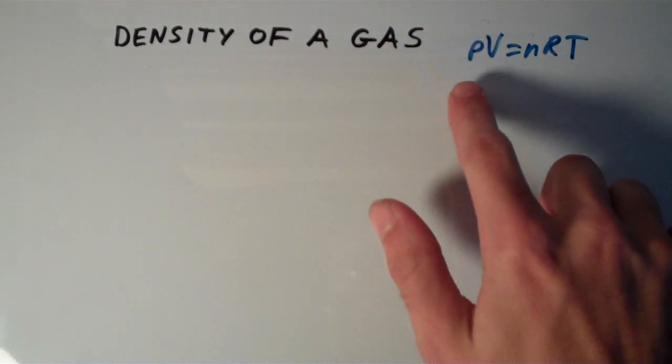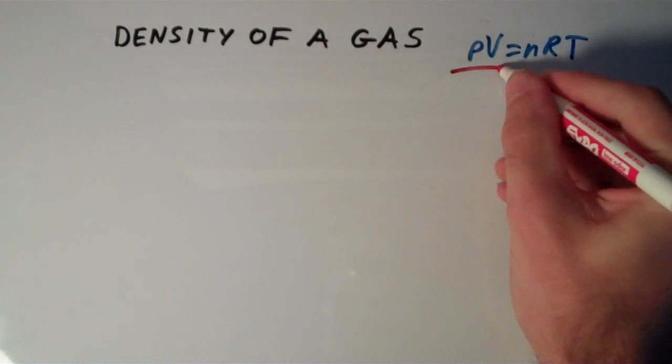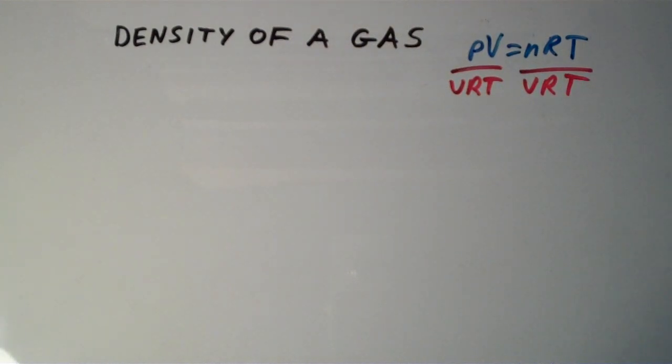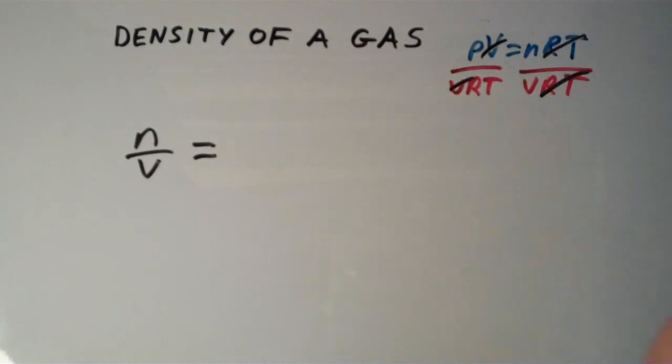I'm going to rearrange this equation, PV equals nRT, by dividing both sides of the equation by VRT. So I'm going to take PV over VRT and nRT over VRT. I'm also going to invert my sides of the equation to make this a little bit cleaner. The RTs will cancel and I'll get n over V is equal to, the Vs will cancel, and I'll get P over RT.